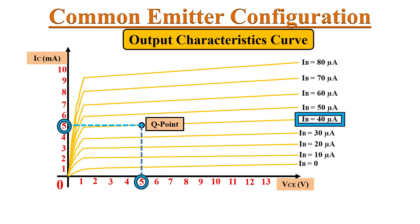The base current IB equals 40 microamperes. So, what we understand from this output characteristic curve is that the Q point tells us that the BJT is biased such that IB equals 40 microamperes, VCE equals 5 volts, and collector current IC equals 5 milliamperes. This operating point should be in the active region.